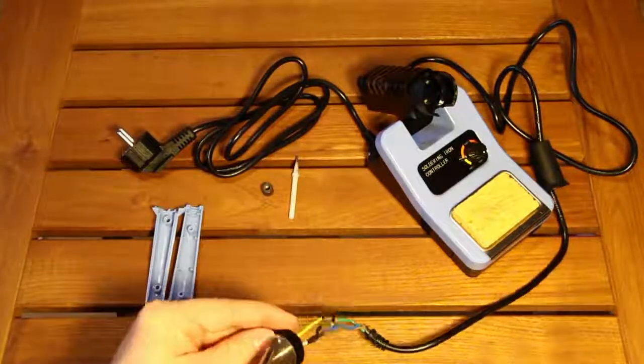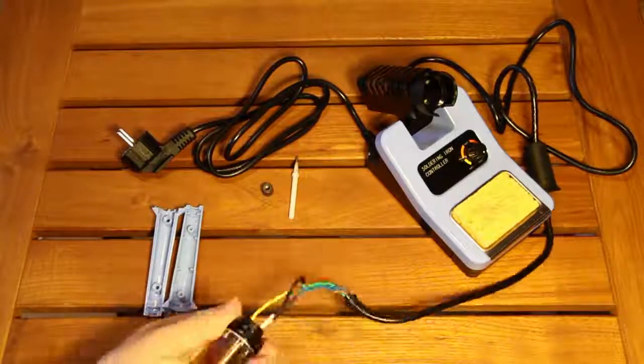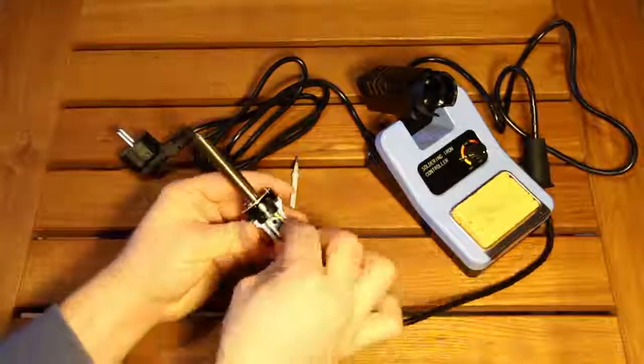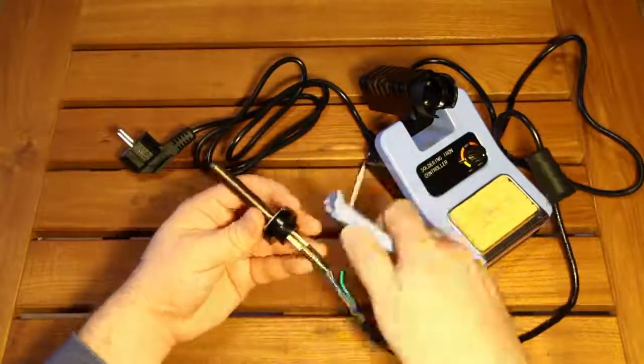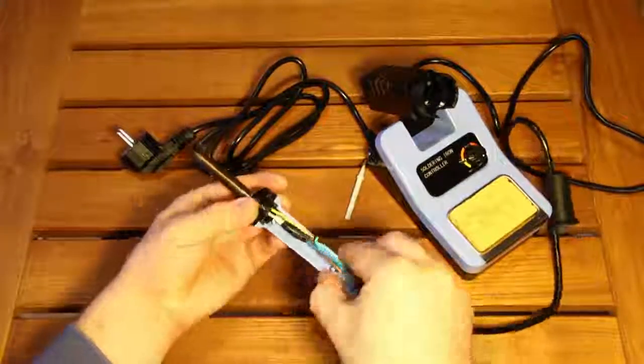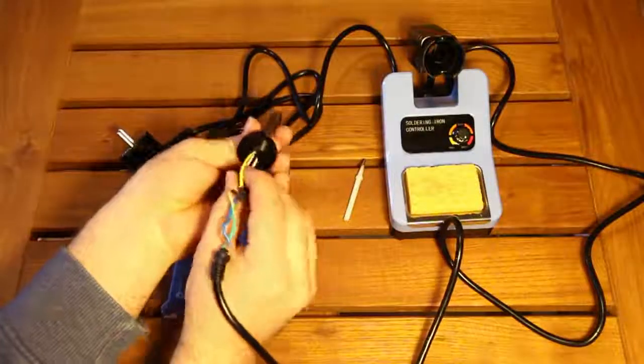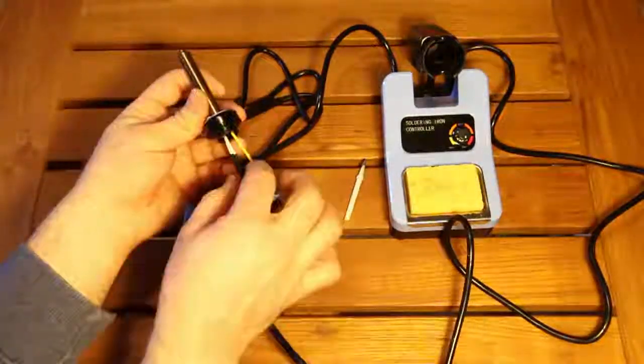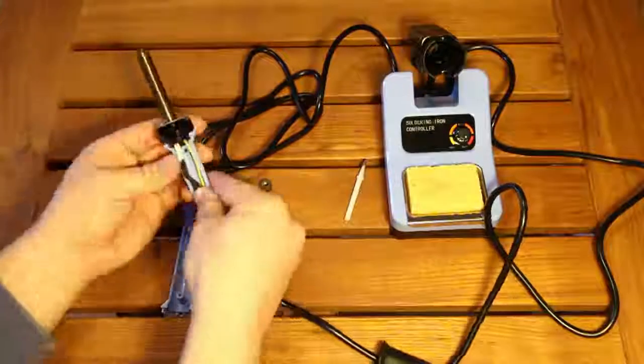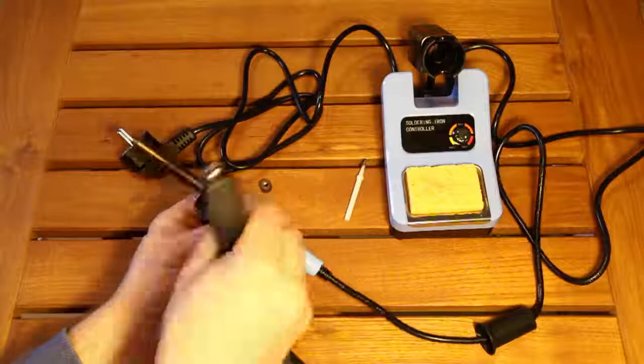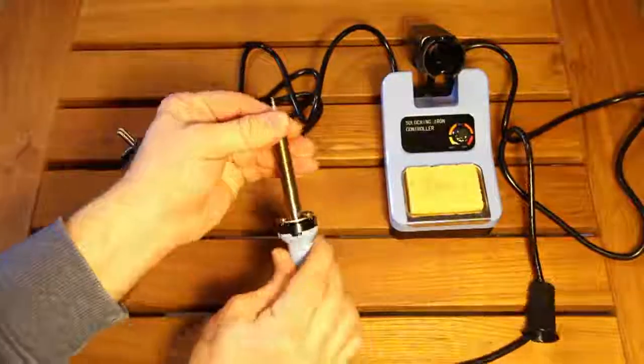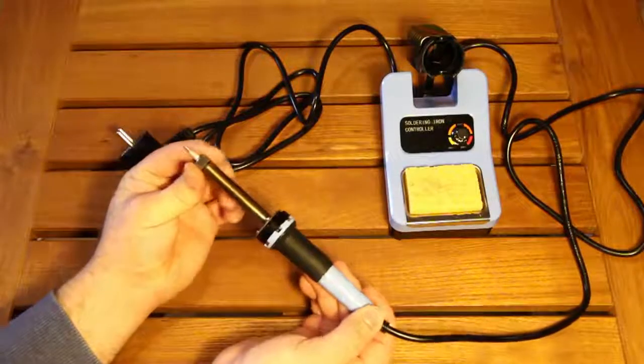Now I'm gonna reassemble the soldering iron back together. I'm gonna stick the heating element inside, being careful not to damage the ceramic insulators. So the soldering iron is back together again.